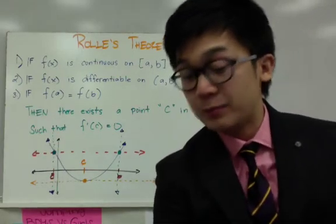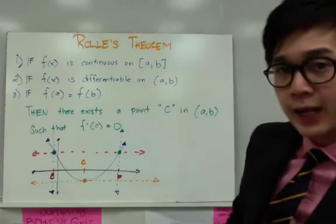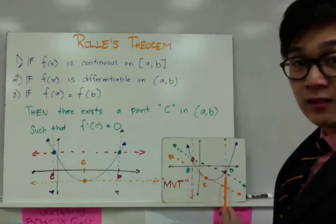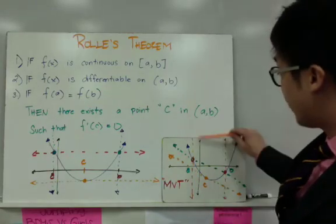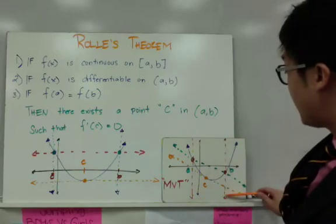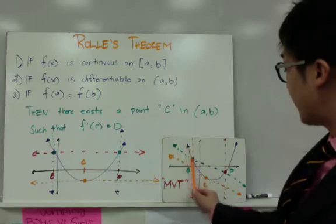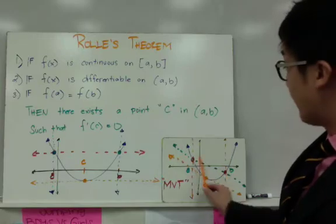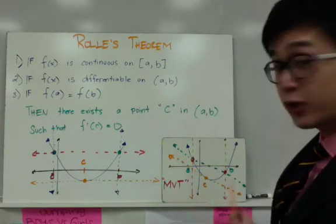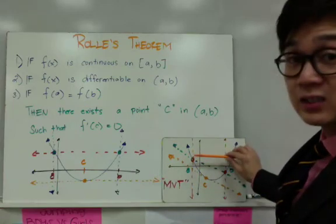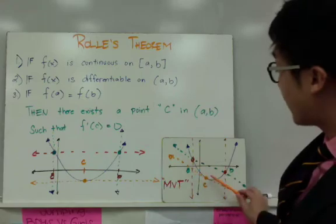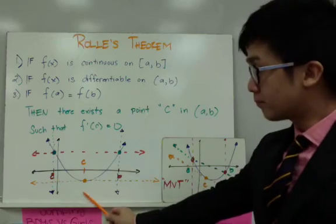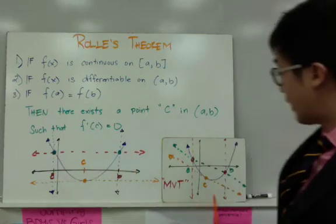In the Mean Value Theorem, the concept is pretty much the same, but the difference is that a and b are not at the same height. This is interval a and this is interval b, and they don't have the same height. For the Mean Value Theorem, f of a doesn't need to equal f of b to find a point c parallel to the secant line. That's the difference between Rolle's Theorem, where f of a and f of b must be the same, and the Mean Value Theorem.